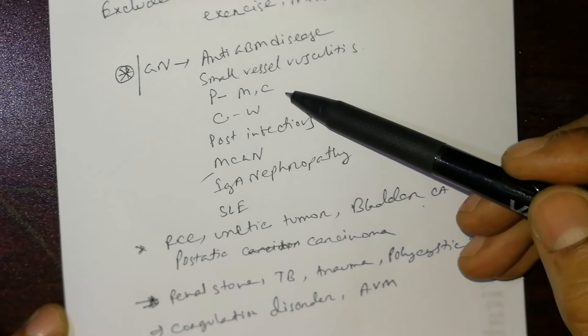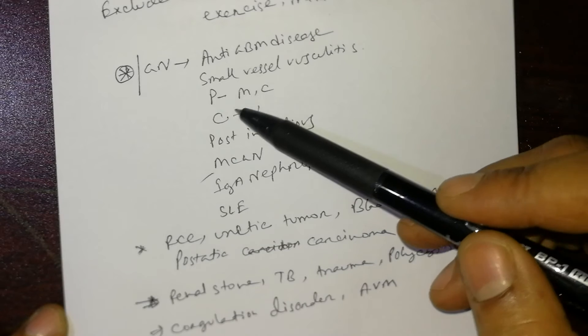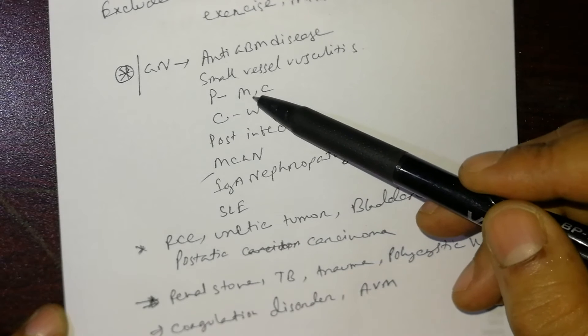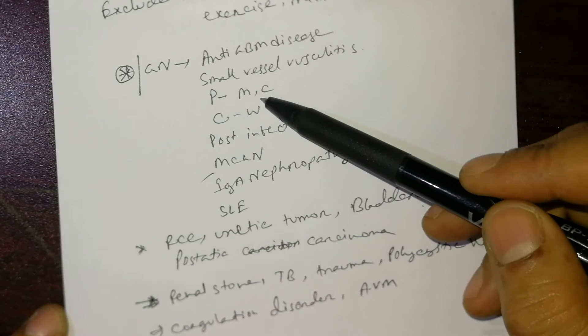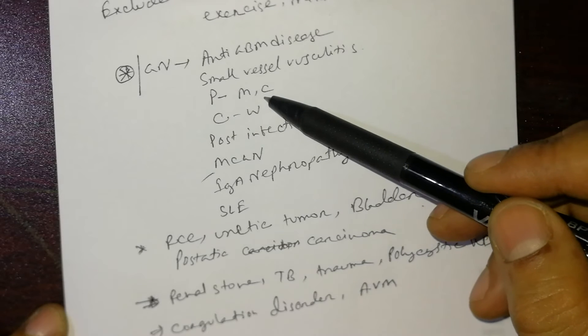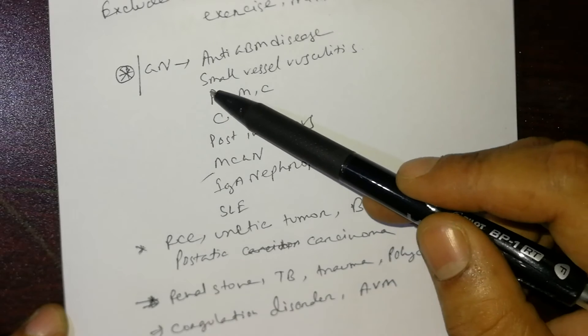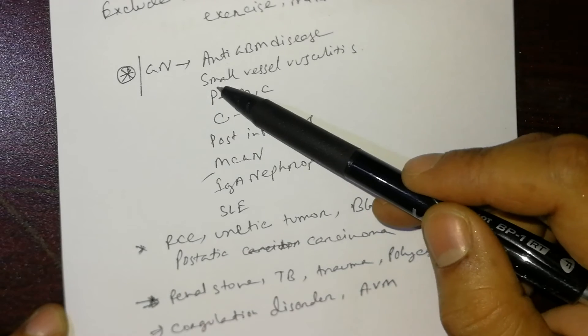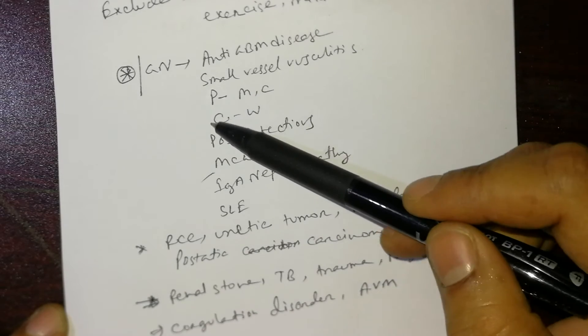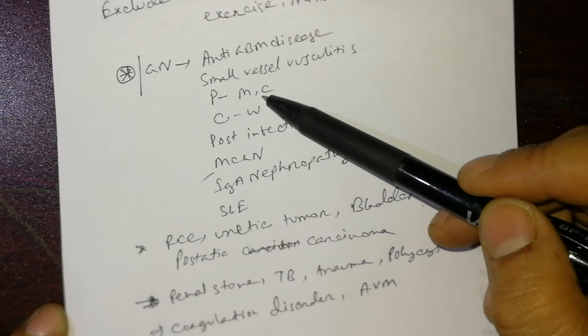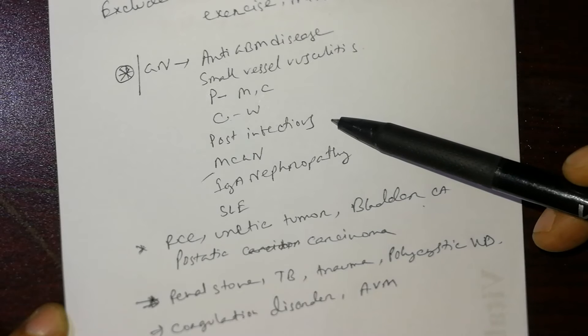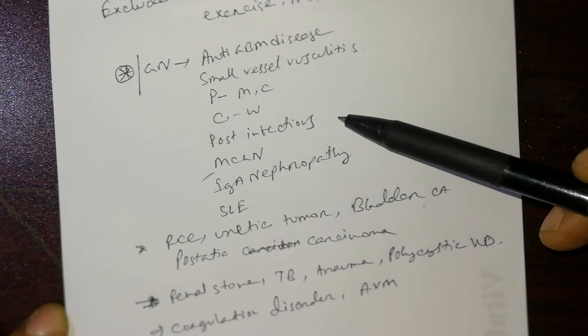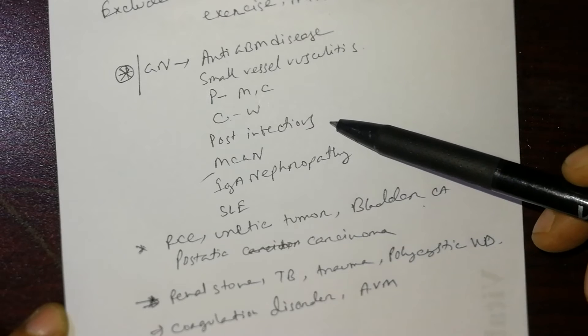Two types: p-ANCA positive in microscopic polyangiitis and Churg-Strauss syndrome. c-ANCA is positive in Wegener's granulomatosis. Also post-infectious, especially after skin and throat infection, which is associated with post-streptococcal glomerulonephritis.